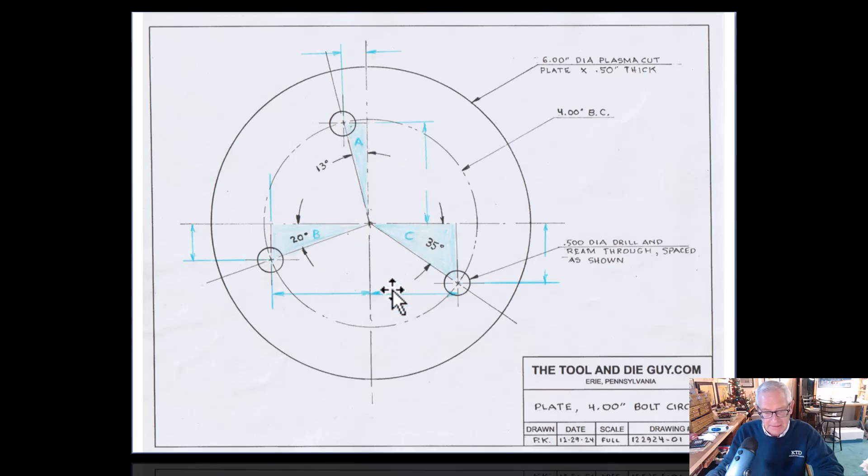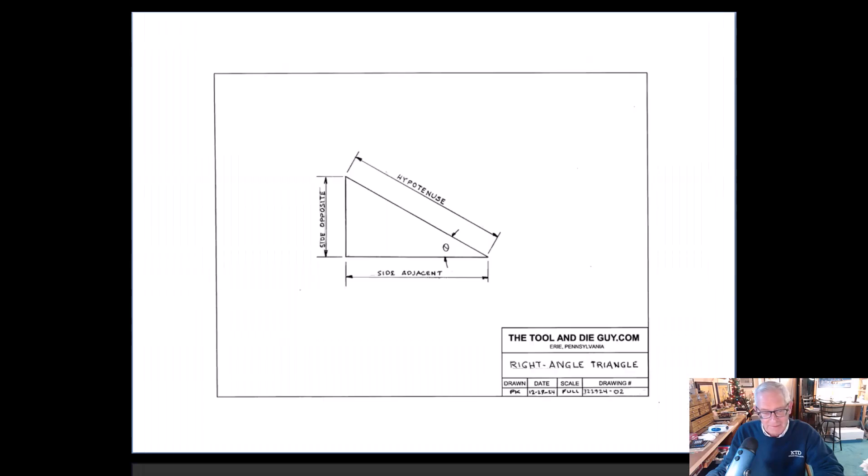These are the legs we need to know. I've left all the dimensions blank and how we're going to solve those problems. Some of you I assume know this, but don't shoot me—I'm just the messenger here. A basic right angle triangle. I don't think we're going to get into any oblique triangle lessons here.